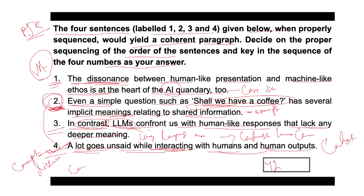Moving to the next sentence, sentence three fits here because it introduces a contrast. It discusses how large language models provide human-like responses but lack the deeper meaning present in human interaction. This contrasts with the human communication described in sentences four and two. So the sequence so far is four, two, three.